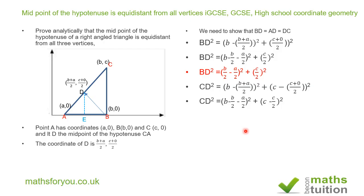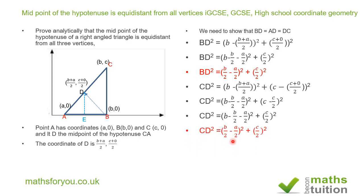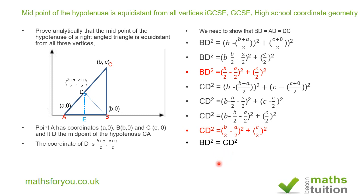Now b minus b/2 is b/2, and c minus c/2 is c/2. So we end up with CD² = (b/2 minus a/2) squared plus (c/2) squared. Therefore CD squared is equal to BD squared. Taking square roots: BD = CD. And since D is the midpoint of CA, AD = CD by definition. So we end up with BD = CD = AD, as required.